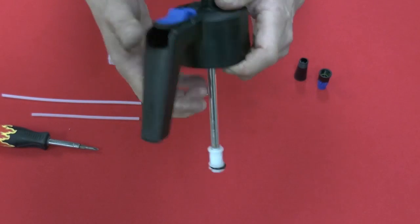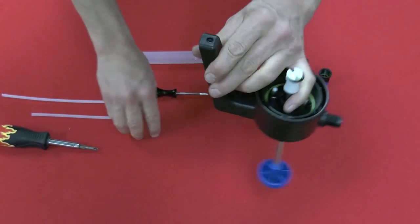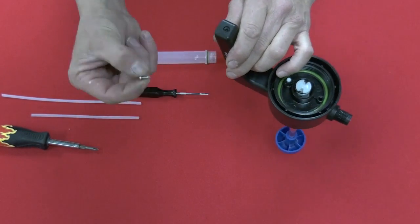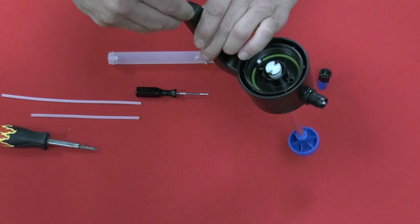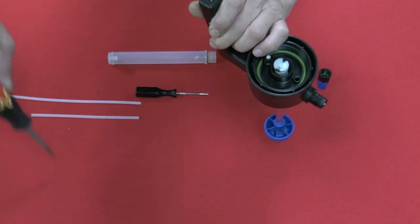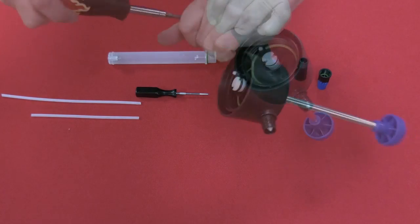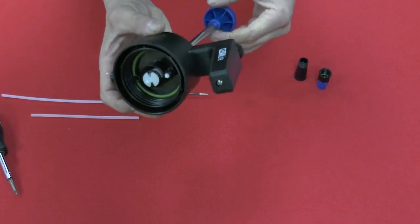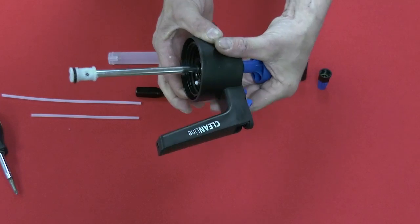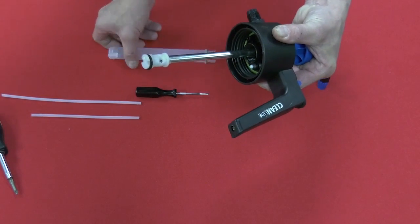You want to make sure that the handle part is correct and everything slides into place easily. No need to force it. Now that it's all snapped back into place, let's replace the screw.